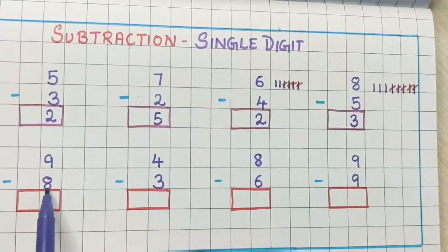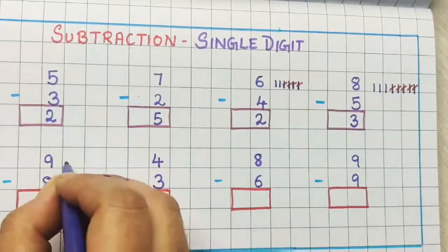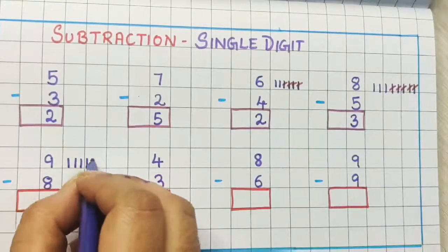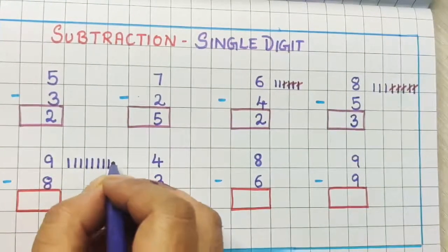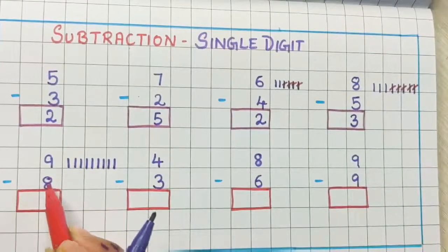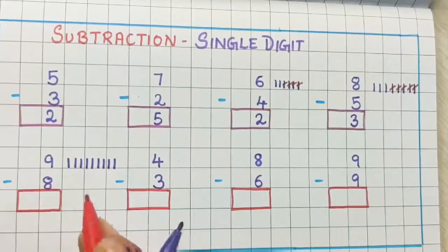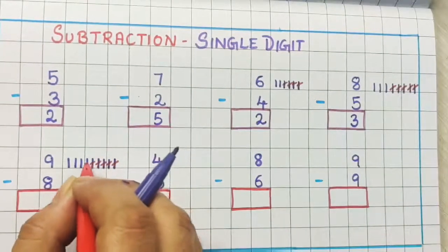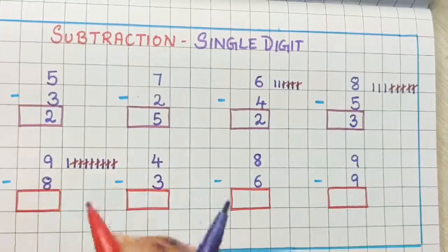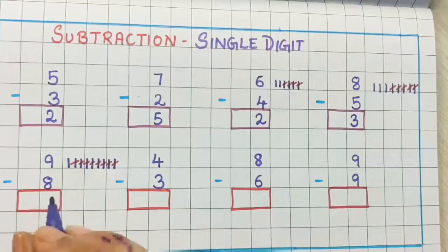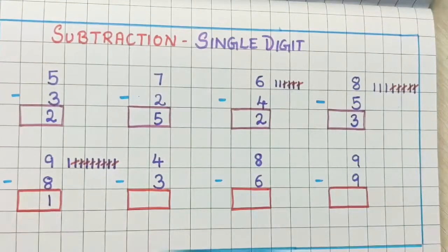Now 9 minus 8. So I will draw 9 sticks: 1, 2, 3, 4, 5, 6, 7, 8 and 9. Now from this I am going to remove 8 sticks: 1, 2, 3, 4, 5, 6, 7 and 8. So how many sticks are left? There is only 1 stick left. So the answer is 1.